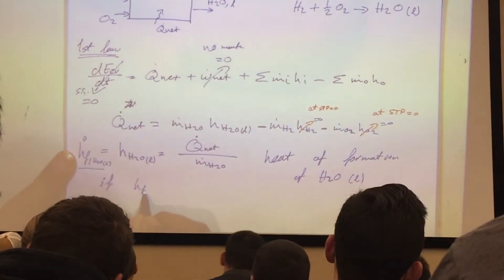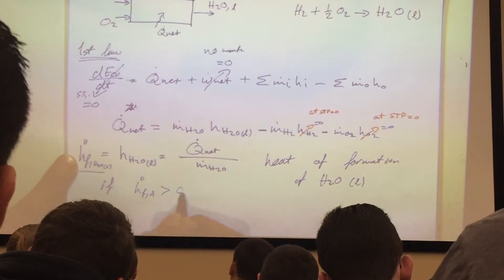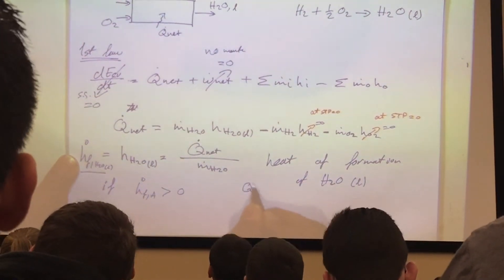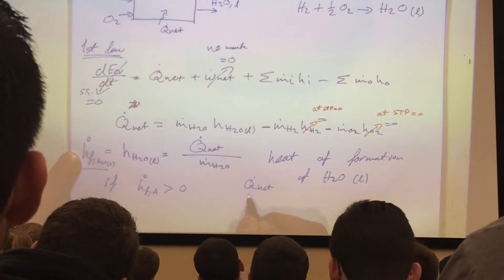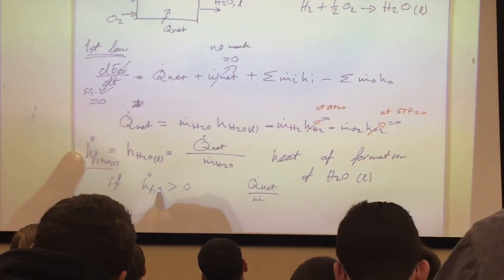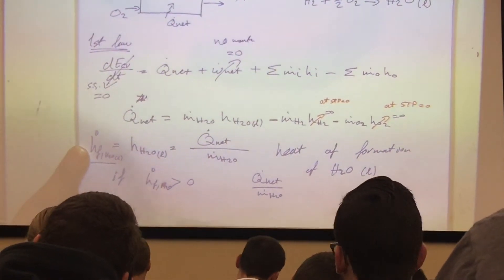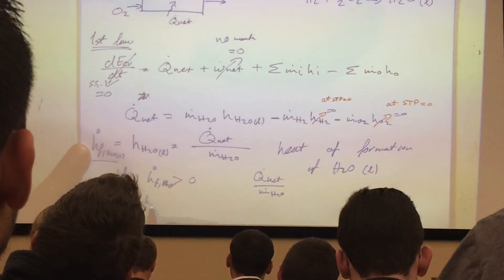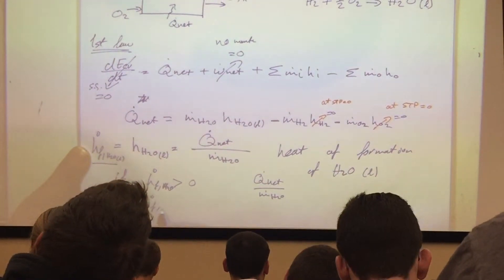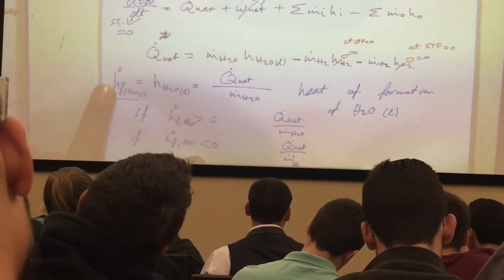But if HF of H2O is greater than zero, Q net over m dot H2O, and if HF of H2O is less than zero...